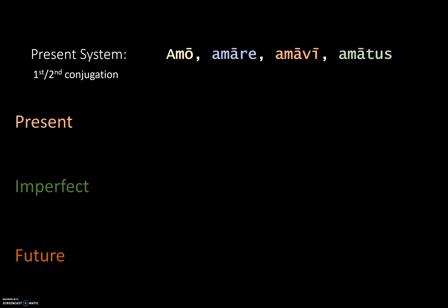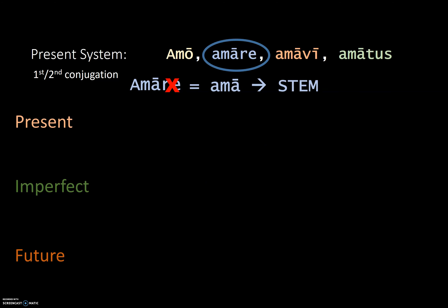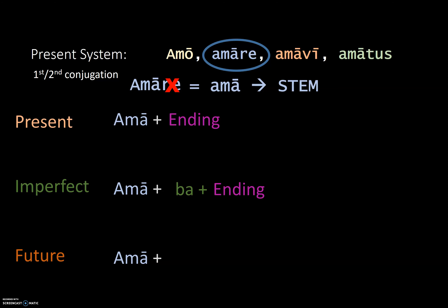To form the present system for a first or second conjugation verb, go to the second principal part, drop the RE, and this gives you the stem. For the present tense, take the stem plus your ending. For the imperfect, take the stem plus BA plus ending. For the future, take the present stem and add BO, BI, or BU depending on the person and number, then add your ending.